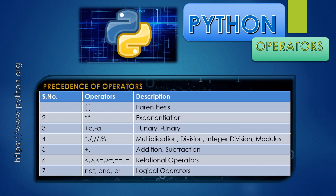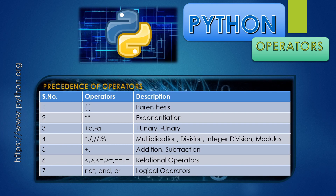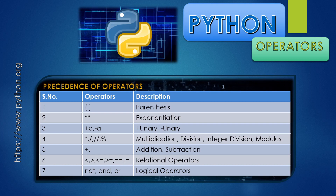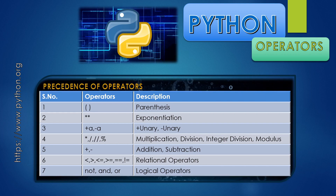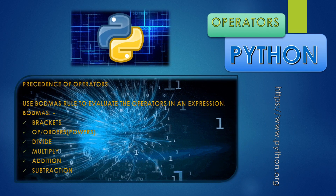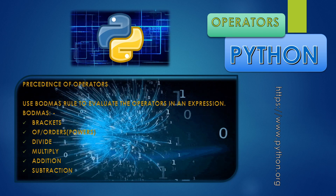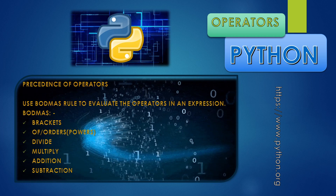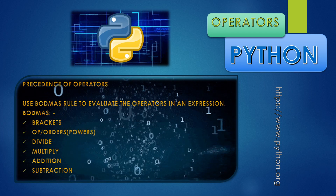In precedence, the order is: first brackets (parenthesis), then exponentiation (power), then unary operations, then multiplication, division, integer division, and modulus division, then addition and subtraction, then relational operators, and finally logical operators — not, and, or. We follow the rule BODMAS: Brackets first, then Order (power), then Division, then Multiplication, then Addition, and finally Subtraction. This is the same rule we learned in mathematics, and it applies in Python programming as well.